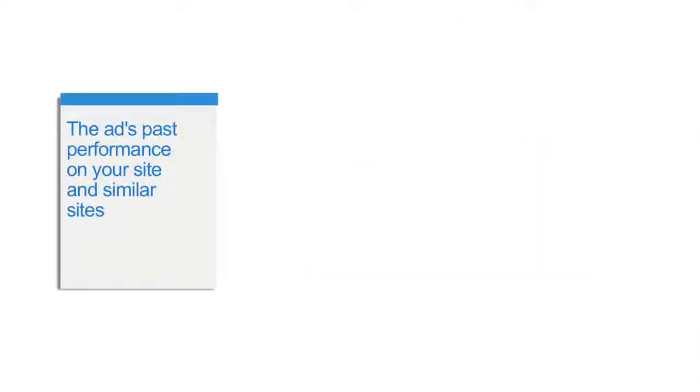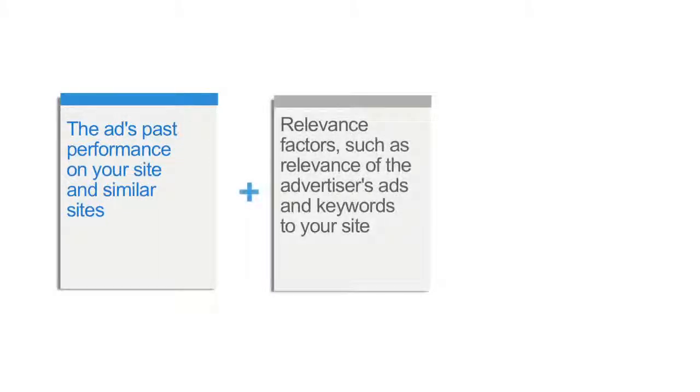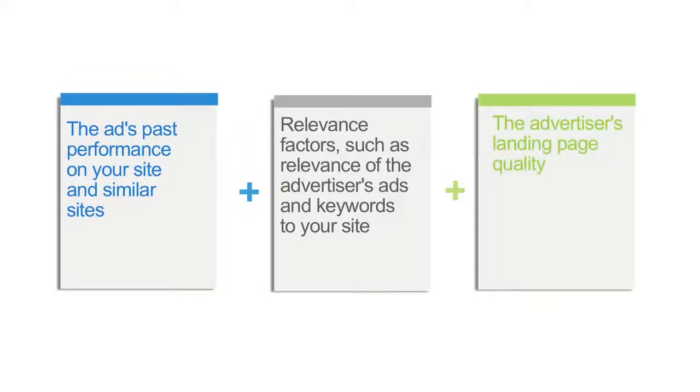Quality score represents an ad's expected user value and performance on a particular site, yours in this case, and it's made up of the following three components. One, the ad's past performance on your site and similar sites. Two, relevance factors such as the relevance of the advertiser's ad and the keywords to your site. And three, the advertiser's landing page quality. The ads are ranked in price according to their bid and their quality score.